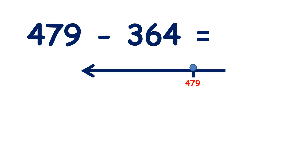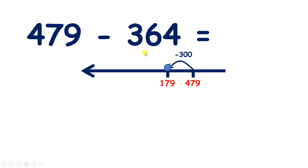We have 479 minus 364, so we need to subtract 3 hundreds, 6 tens, and 4 units. If we have 4 hundreds and we subtract 3 hundreds, that leaves us with 100, because 4 minus 3 is 1, so we have 179.